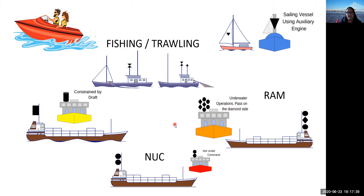Last up on day shapes for this evening: not under command. This is a vessel that cannot comply with the regulations — for some reason it cannot get out of your way. It could be becalmed and drifting, or its steering gear is stuck. It goes to the very top of the hierarchy. The day shape is two balls sitting on top of the vessel, visible from all around.